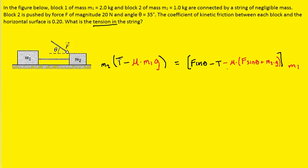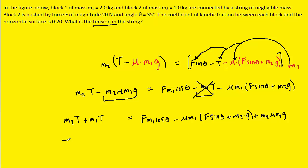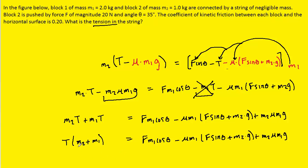Now we could distribute m2 into the parentheses and then distribute m1 into the brackets. Be careful: m1 is going to be multiplied to each term. Let's get the tension terms together — this term can be added over to the left-hand side, and this term can be added over to the right-hand side. On the left side, we can factor out the tension t so that we have m2 plus m1, and that equals the right-hand side. Then we divide both sides by m2 plus m1 so it cancels out on the left-hand side.